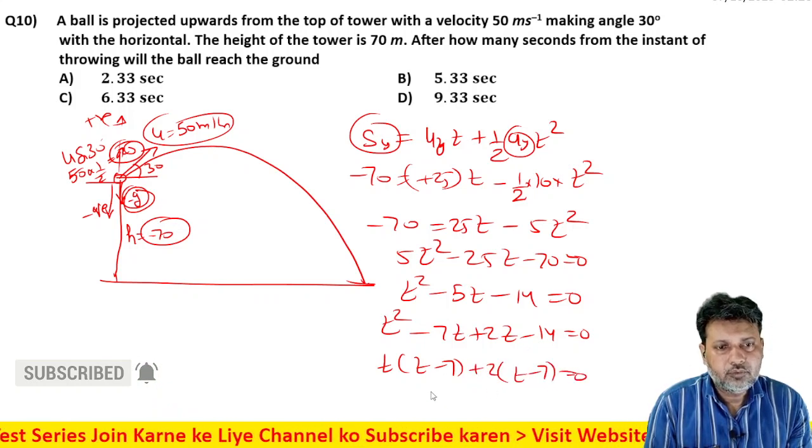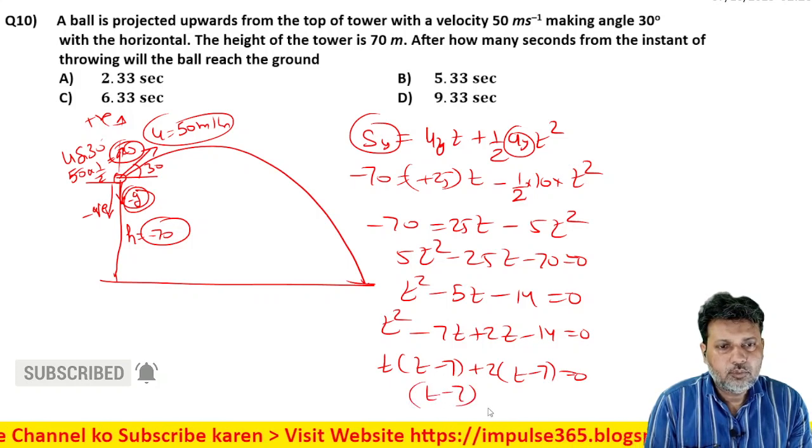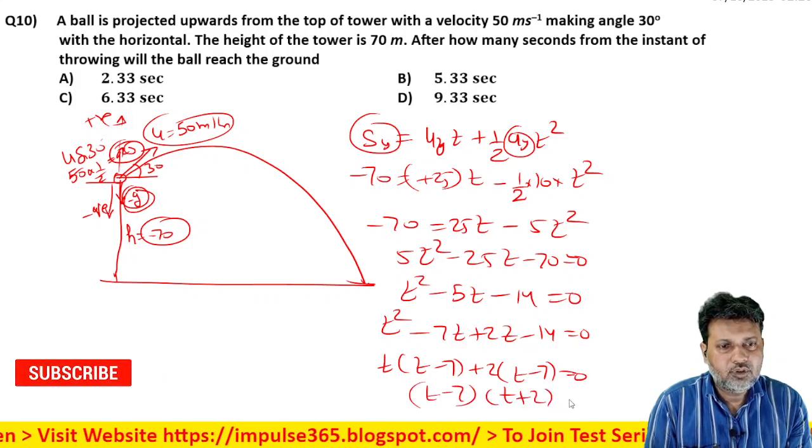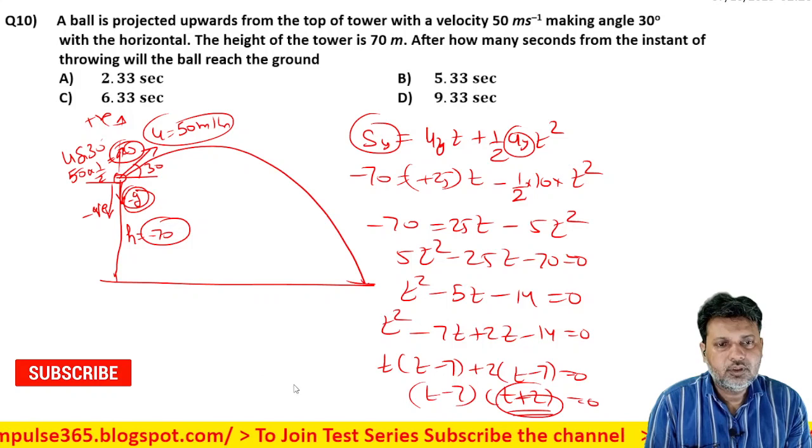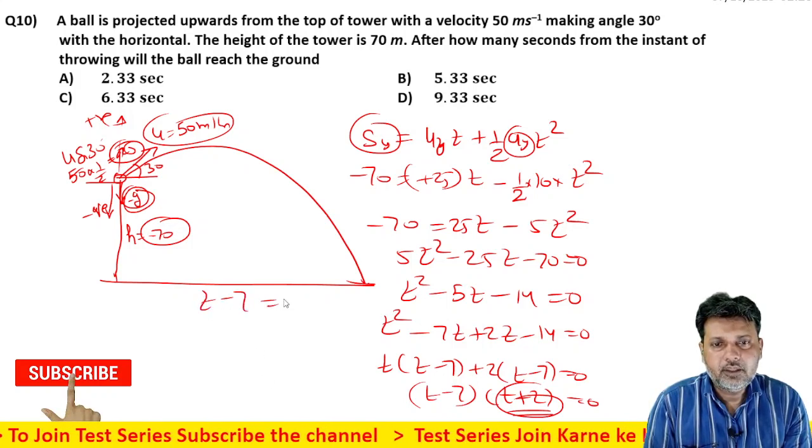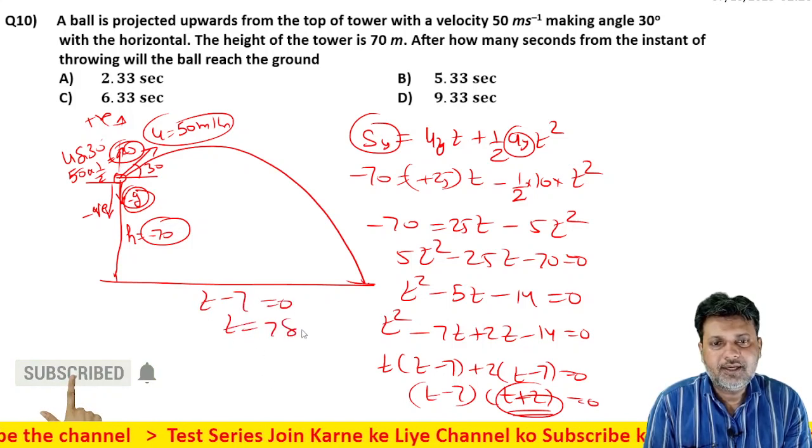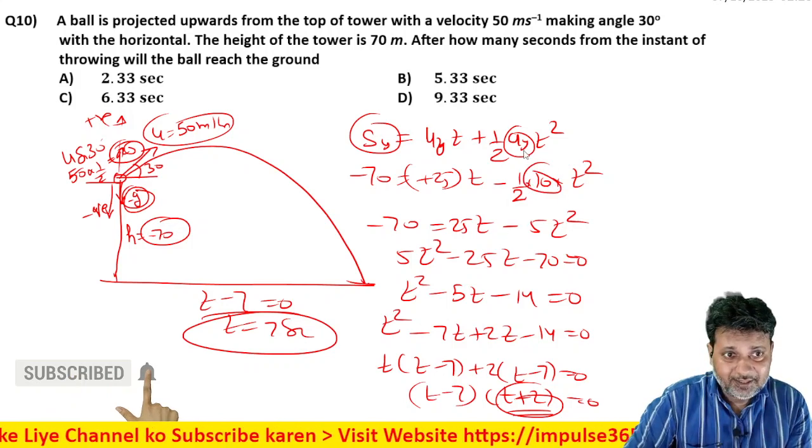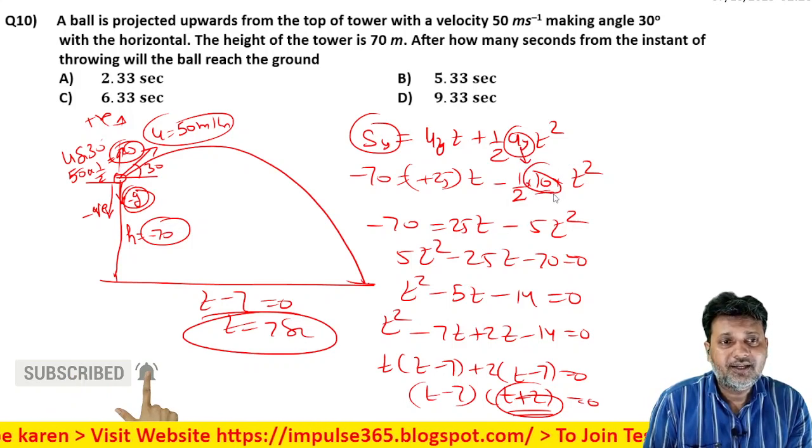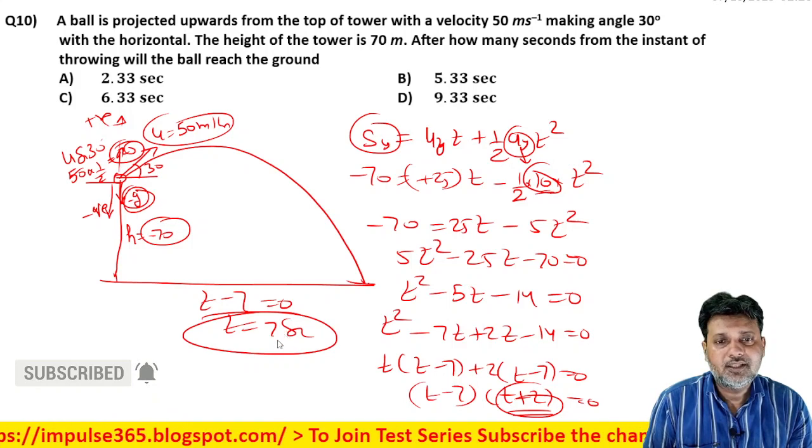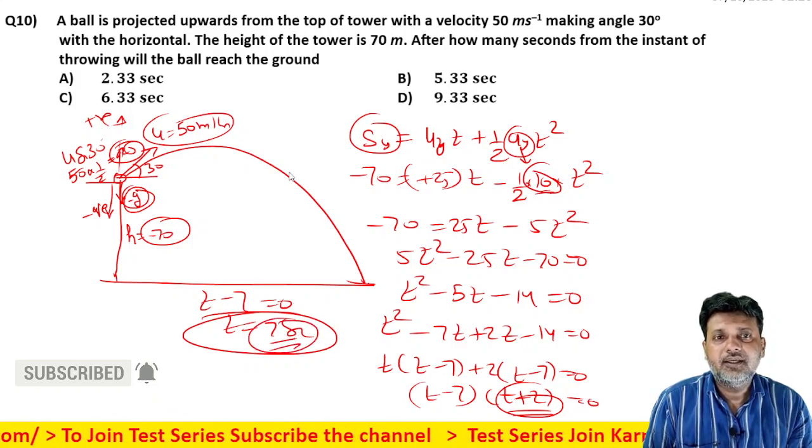t minus 7 or t plus 2. So t minus 7 common area, t plus 2. Time toh negative nahi ho sakta, toh reject. t minus 7 equal to zero, t is equal to 7 seconds.